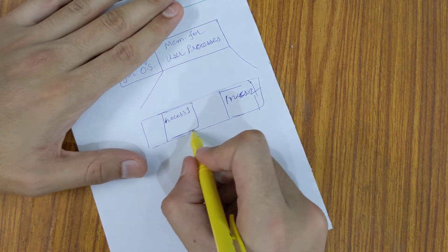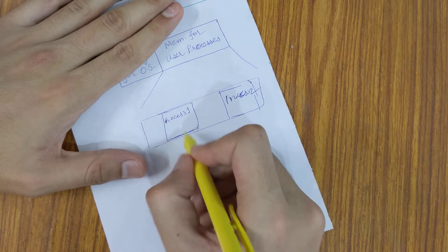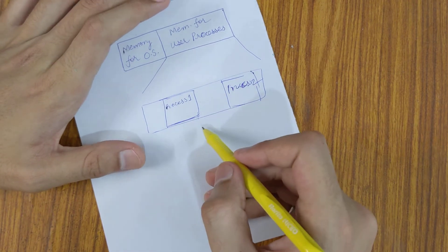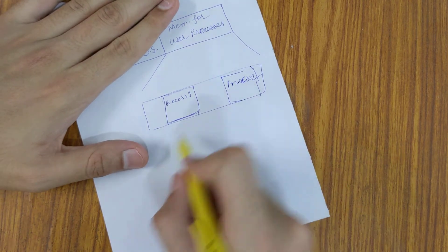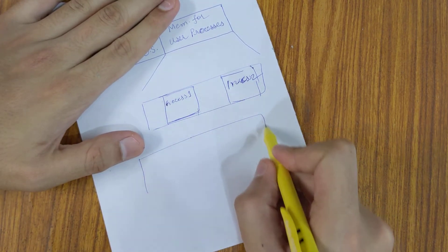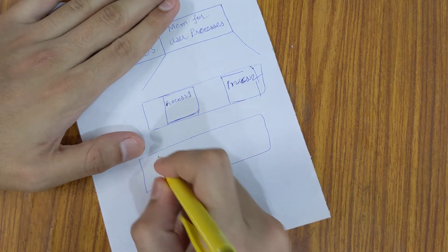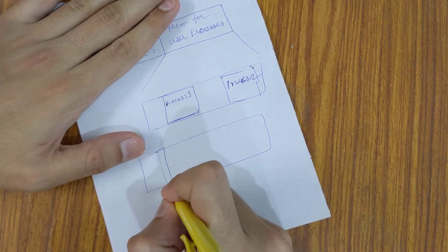This is a contiguous memory chunk, that is, there are no gaps in between. Whereas in non-contiguous allocation, out of this whole memory chunk, let's say if we have our process one, then the process one can have the memory